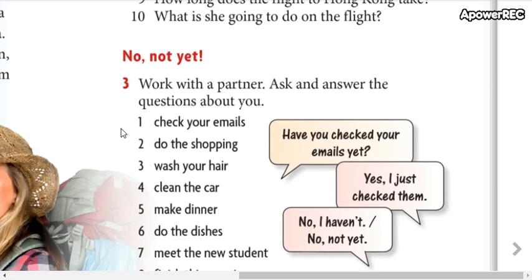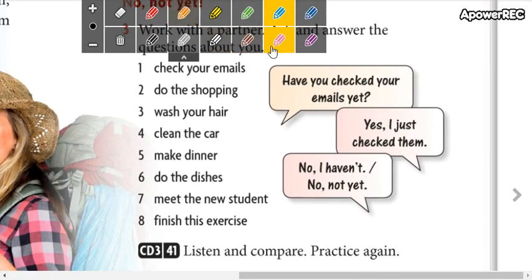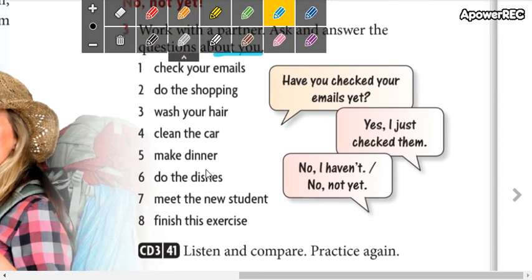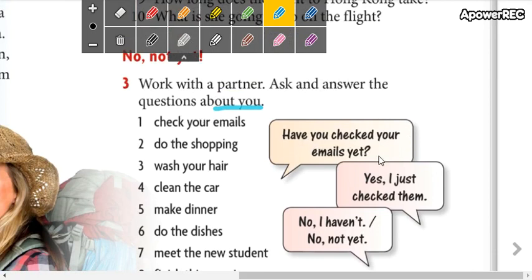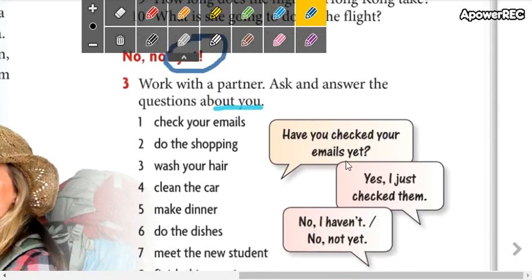Now here in this part we have 'no, not yet.' So here you are going to answer these questions in affirmative or negative form. These are about you, so they must be true. Check your emails - these are just questions, so you say 'Have you checked your emails yet?' You have to include the word 'yet.' Remember that this word goes at the end of the question or at the end of the negative form.